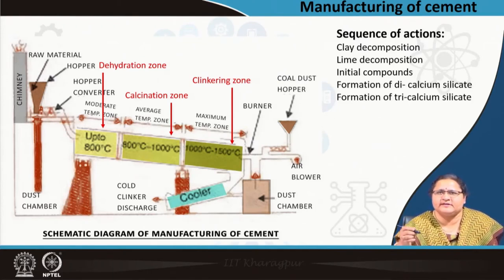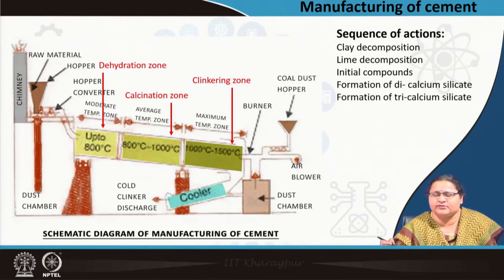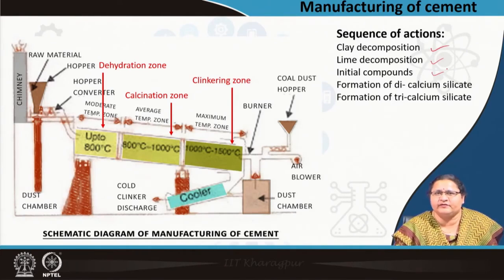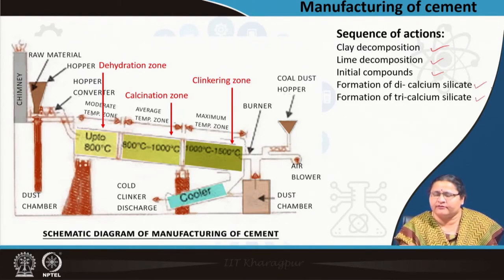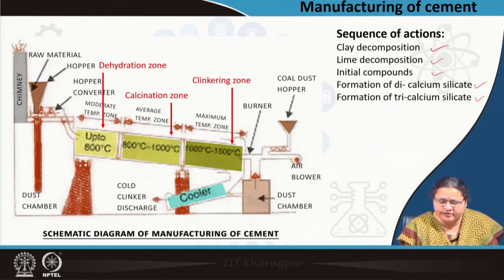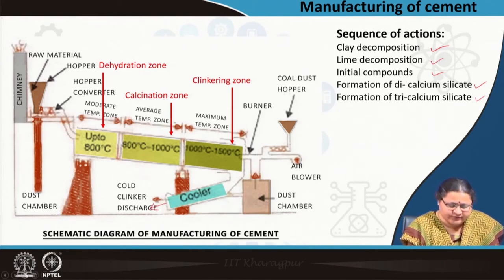This area is the calcination zone and the last part is the clinkering zone. Clinkers are small ball-like substances — the transformation of all the mixed dust fed into the system as raw material. The clay decomposes, the lime decomposes, initial compounds form, and then calcium silicates are formed: dicalcium silicates, tricalcium silicates, alumina ferrites, and calcium aluminate. These compounds start forming and are finally formed. The clinkers then move into the cooler and are discharged.